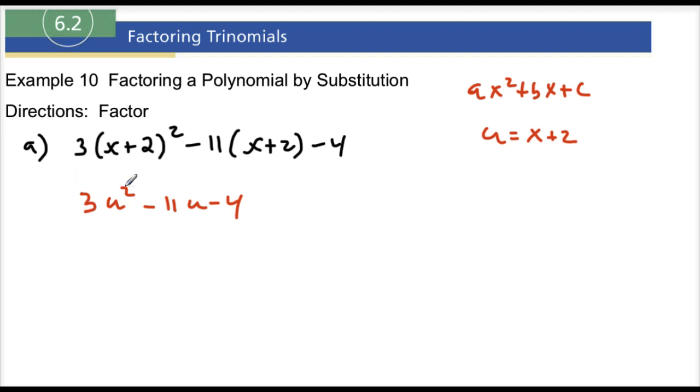So we're going to factor 3u squared minus 11u minus 4. If we factor this guy right here, I'm just going to start by saying 3u and u. And if I want to multiply to get 4, I know it's going to be 4 and 1. So I'm going to do 1 and 4.